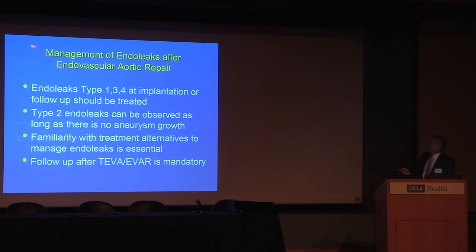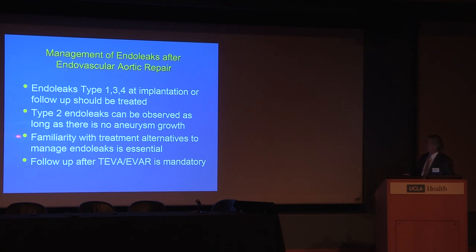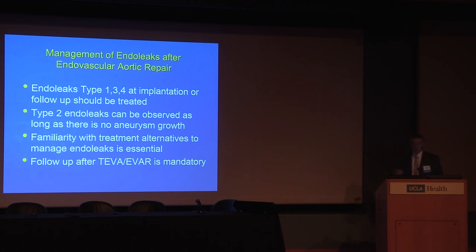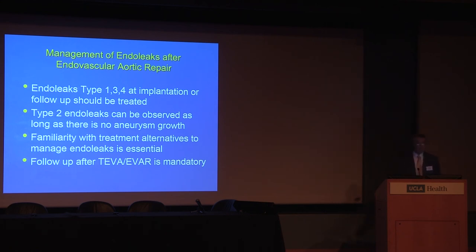In summary: management of endoleaks after endovascular aortic repair — Types 1, 3, and 4 at implantation or follow-up should be treated. Type 2 endoleaks can be observed as long as the aneurysm does not show growth; if it shows growth, the conventional wisdom is to treat. Being familiar with the alternatives to manage endoleaks is essential not only during follow-up but also during implantation. Follow-up after TEVAR and EVAR is absolutely mandatory — about 80% of patients who develop rupture during follow-up are those lost to follow-up, showing up in the emergency room with a rupture.